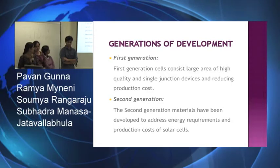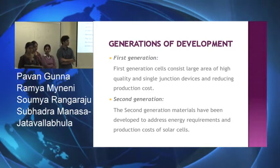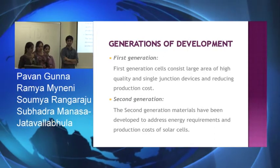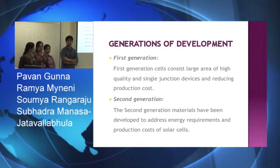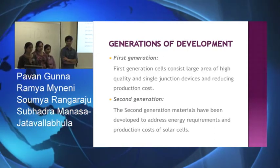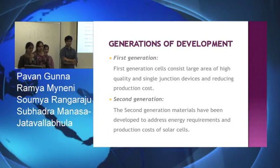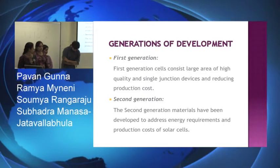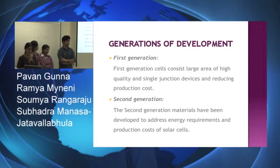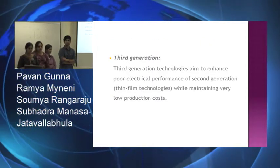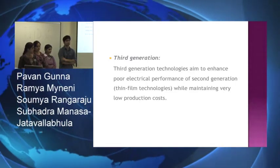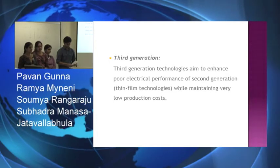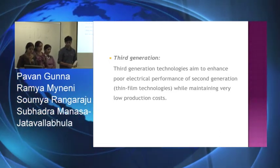We have three generations of development on the solar cells. The first generation consists of large area and high quality single junction devices with low production cost. The second generation has been developed to address energy requirements and the production cost of the solar cells. And the third generation aims to enhance the poor electrical performance and is basically aimed to reduce the production cost.